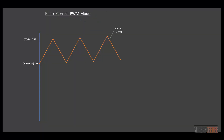In our first example, we'll use the phase correct PWM mode for AVR microcontrollers, which is slightly different from what we saw earlier. In this case, the carrier signal is a triangular wave — we count from 0 to 255, then down to 0, and that's considered one period.